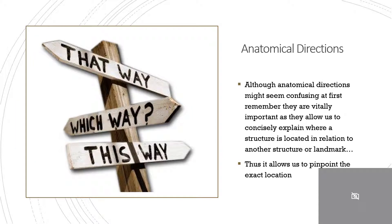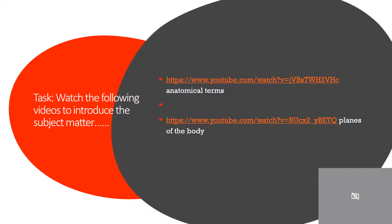Anatomical directions. Although anatomical directions might seem confusing at first, remember they are vitally important as they allow us to concisely explain where a structure is located in relation to another structure or landmark, allowing us to pinpoint the exact location. The following videos will be made available to watch via your VCS05 unit and will cover anatomical terms and planes of the body. Please make sure you watch them, as they really nicely explain such terms to assist you.